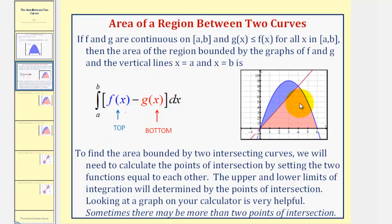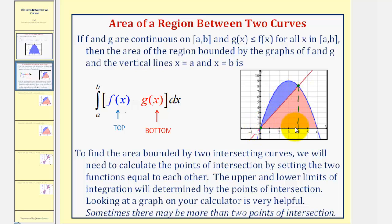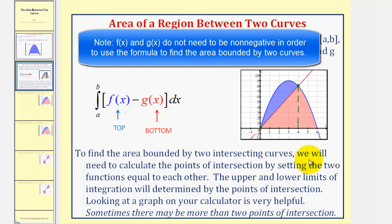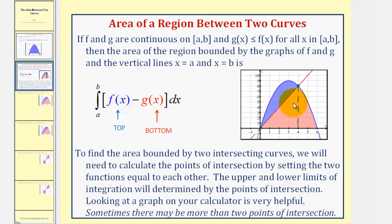Looking at the graph on the right, if we wanted to find the area of this blue shaded region, we begin by considering the points of intersection. If we found the area under the quadratic function over this interval and then subtracted the area under the linear function over the same interval, it would leave us with the area of this blue shaded region — the area bounded by the two curves. To find the area bounded by two intersecting curves, we calculate the points of intersection by setting the two functions equal. The upper and lower limits of integration are determined by those points. Looking at the graph on a calculator or graphing software is often very helpful, and sometimes we may have more than two points of intersection.